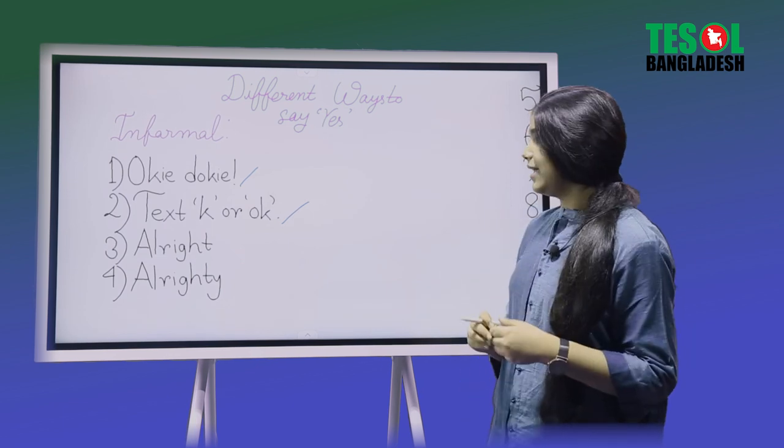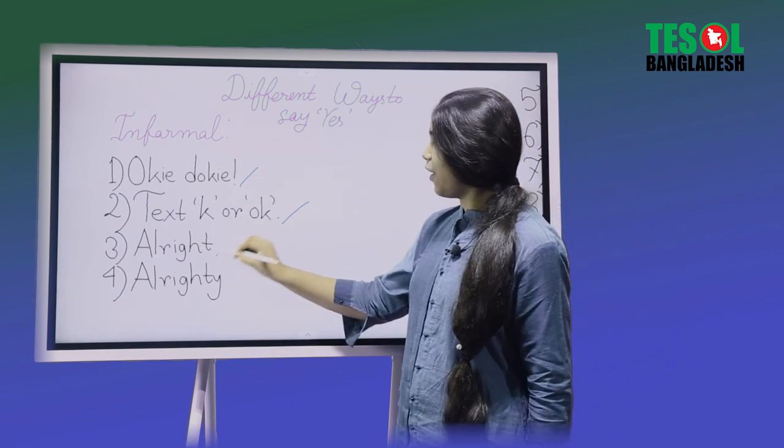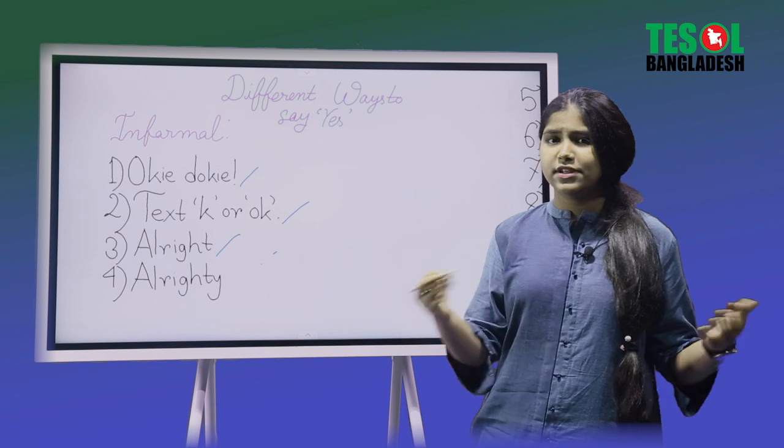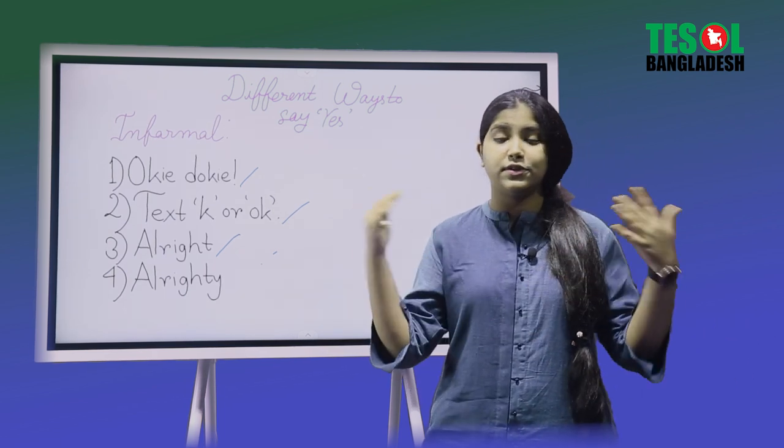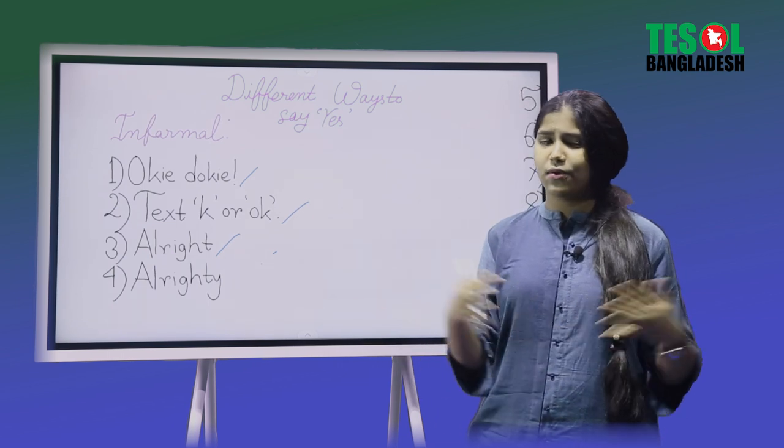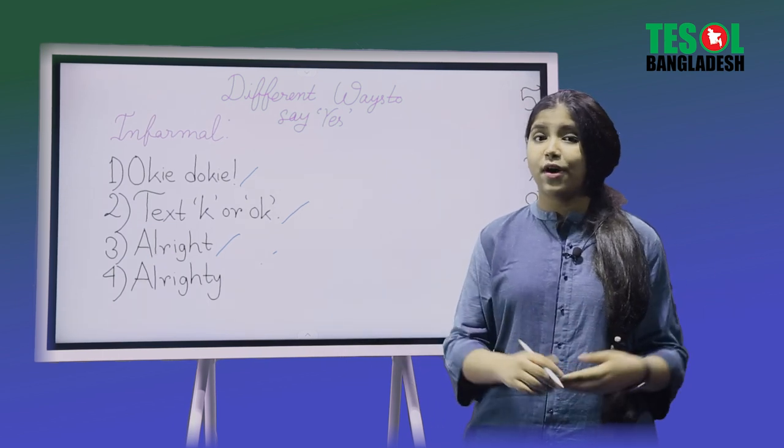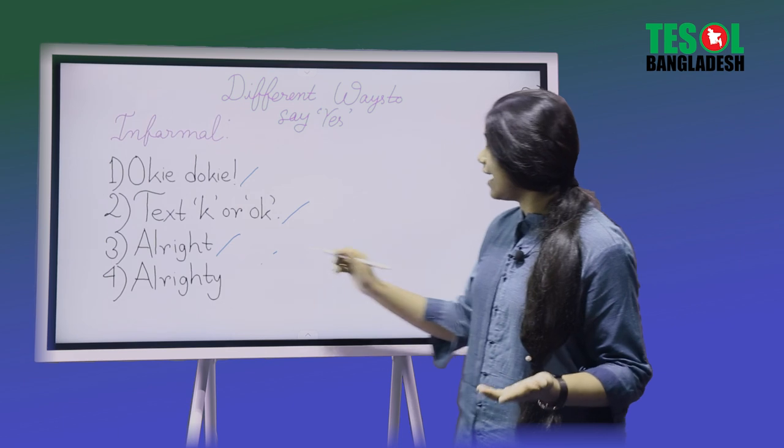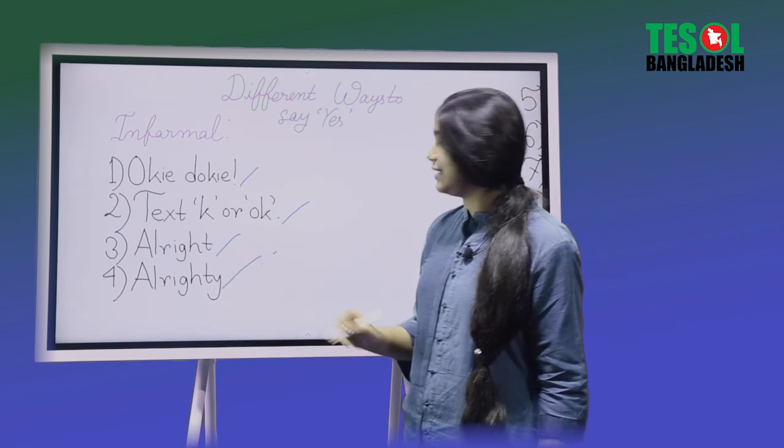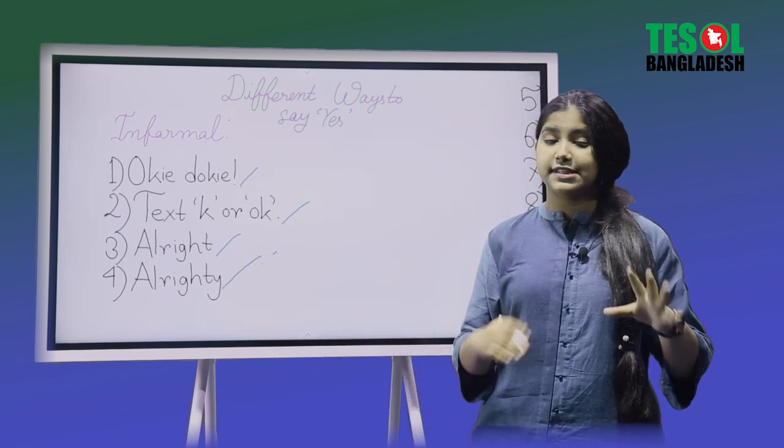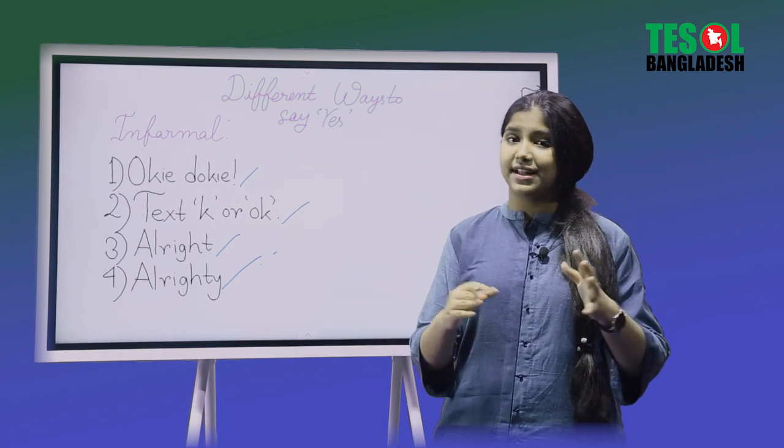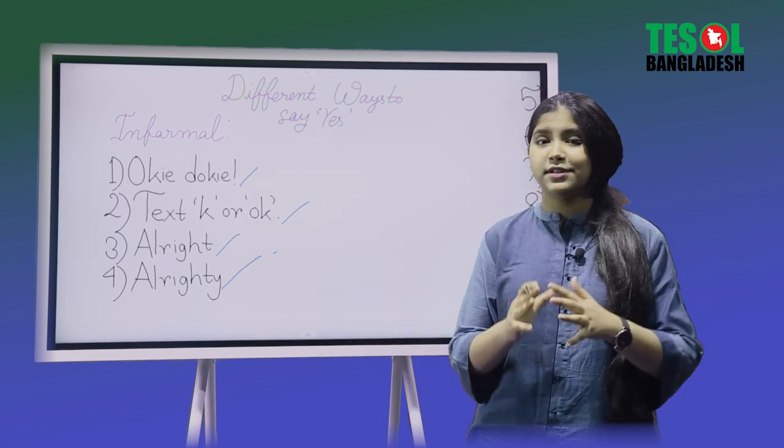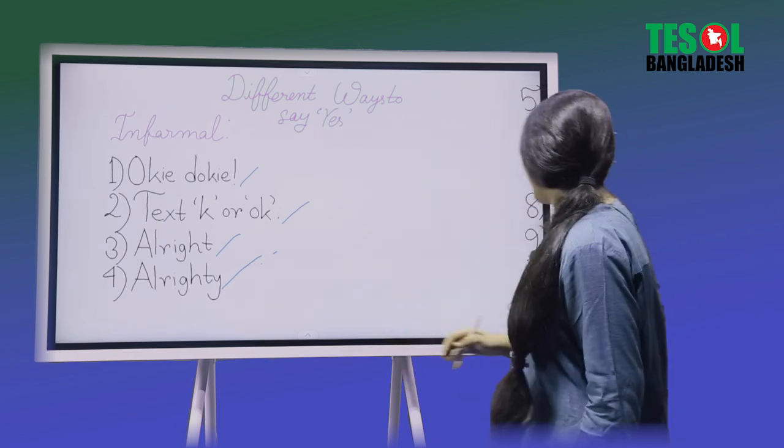Now number three: alright. Do you want to go to the amusement park? Then say alright, I will. And the next one which you see, alrighty, this is also kind of the same. Alrighty, just you add the y to make it a little bit more fun, because you know fun is everything.